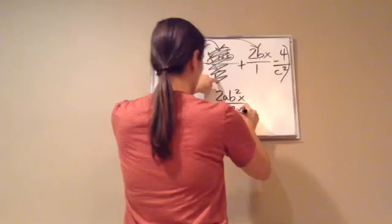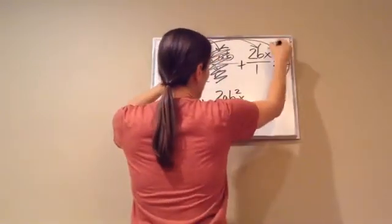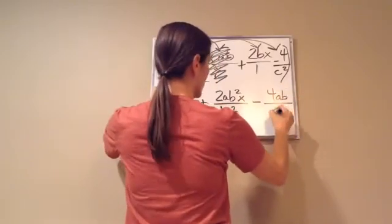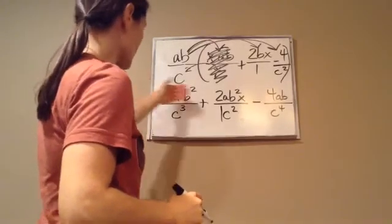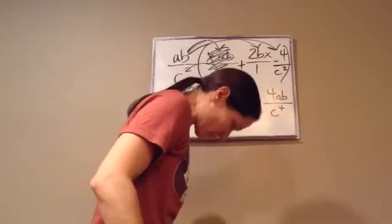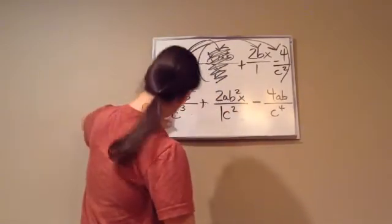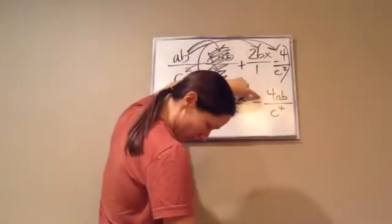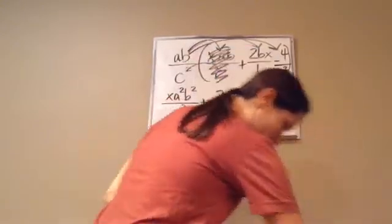Minus 4ab, 4ab over c to the 4th, c to the 4th. Now remember, look from top to bottom: you're good there, nothing, nothing. Let me check, make sure I got all the right answers. A x squared b squared over c cubed, 2ab squared x over c squared, minus 4ab over c to the 4th. Yes, we did it. All right, final answer.